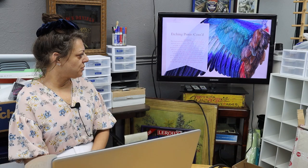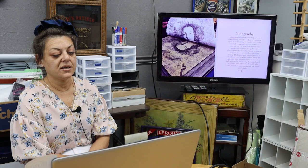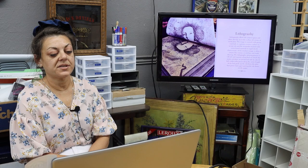This print here is a Dürer print — it's one of my favorites. It's a beautiful pheasant wing. Lithography is our next type of print. Lithography allows the artist to paint and draw directly onto the surface of a stone or metal plate. The image is created with greasy materials on a grease-sensitive surface to accept ink, and the remainder treated with a water-based material to repel ink. A characteristic of the resultant image is often a crayon-like texture or ink line and wash drawing. The lithographic printing process is offset and requires a long bed on which the paper and plate are positioned side by side. A full-width roller passes along the entire length of the bed, picks up the ink from the plate, then presses it back down, putting the ink down on the paper.